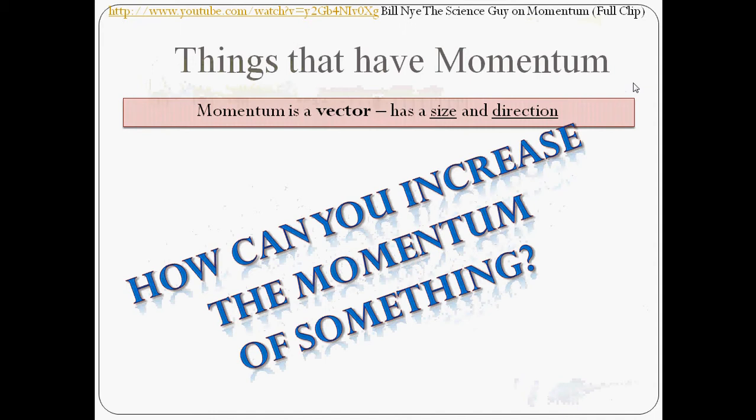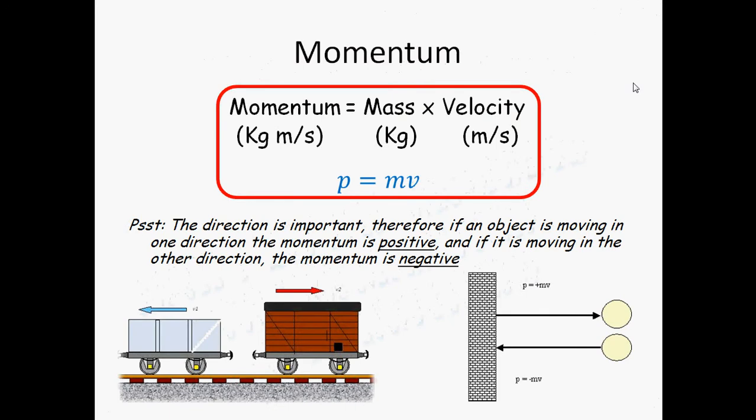How can you increase the momentum of something? Now again, if you saw the video, you may have noticed that the ping-pong ball doesn't put the pins down, but when he tries with a bowling ball, the pins go down. So if you increase the mass, you increase the momentum of something. If you increase velocity, you also increase the momentum of something. This is because momentum equals mass times velocity.